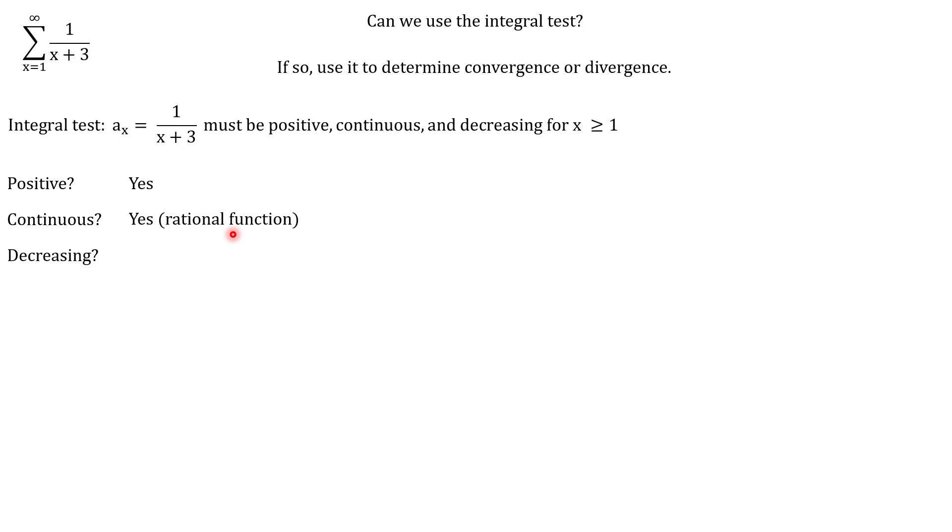And now our last question, is our function decreasing? And in order to determine if a function is increasing or decreasing, we can take the first derivative. So here we have the first derivative of 1 over x plus 3, and that'll give us negative 1 over (x + 3) squared. And what we can do here is a similar analysis to what we did in the first question. If we look at the numerator, that's a negative 1. So that's always going to be negative. And then if we take a look at the denominator, any value for x greater than or equal to 1 is always going to make this denominator positive. So we have a negative over a positive, which means that this is always going to be negative across the interval. And if the first derivative is always negative, that means that our function is always decreasing. So the answer to our last question for decreasing is yes.